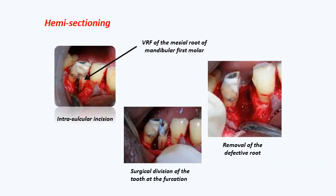Hemi-sectioning is indicated when there is a problem in one root of a lower molar — a root that is not restorable. The tooth is cut into two halves from the crown to the furcation, and one entire half — crown and root together — is removed.